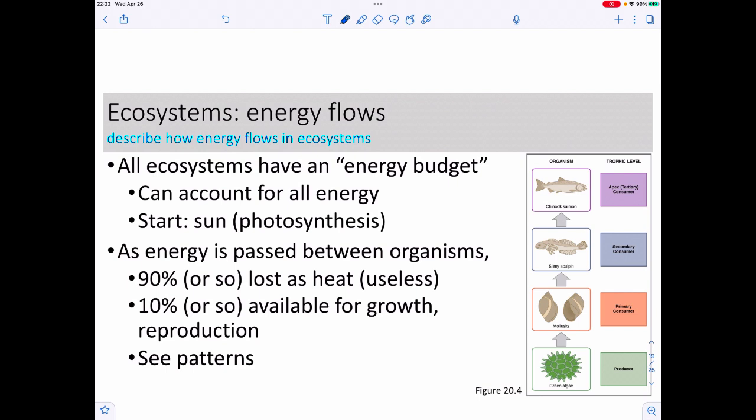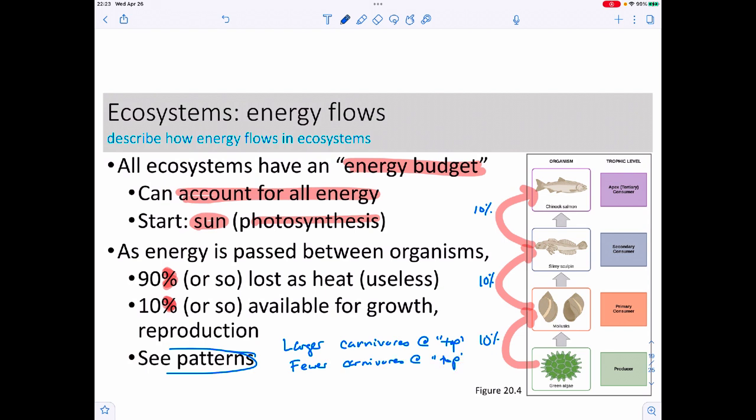When we look at these ecosystems, energy moves in them and they all try to have what we call an energy budget. We can account for all of that energy. It all starts with the sun and photosynthesis. As it moves from one thing eating it to something else, not all of it moves on. About 90% of that energy is going to go away as heat, and only about 10% sticks around. So there's only about a 10% transfer between these levels. What we tend to get are larger carnivores at the top of this chain. We also tend to see fewer carnivores at the top of that particular chain.